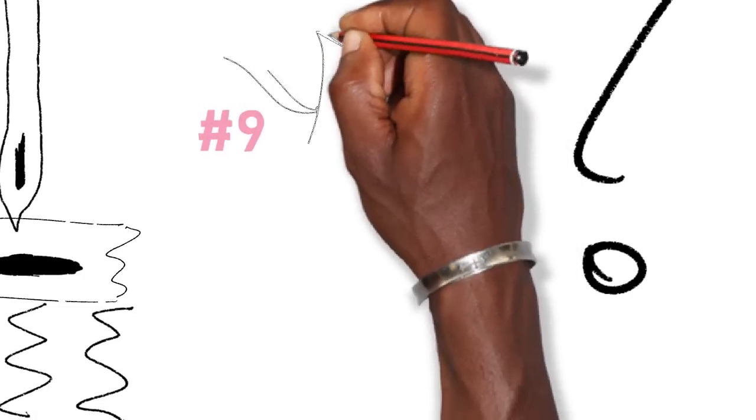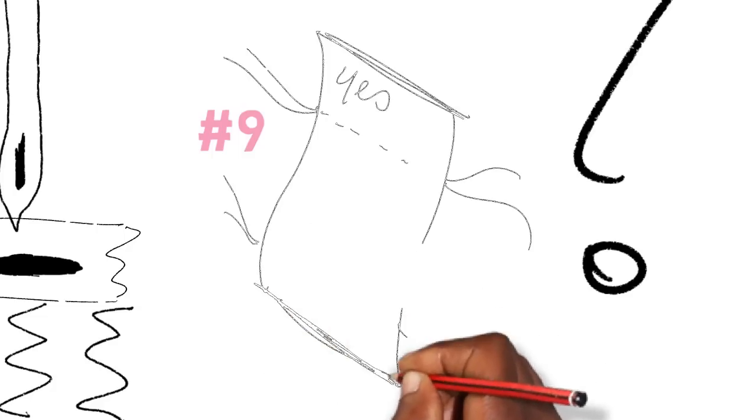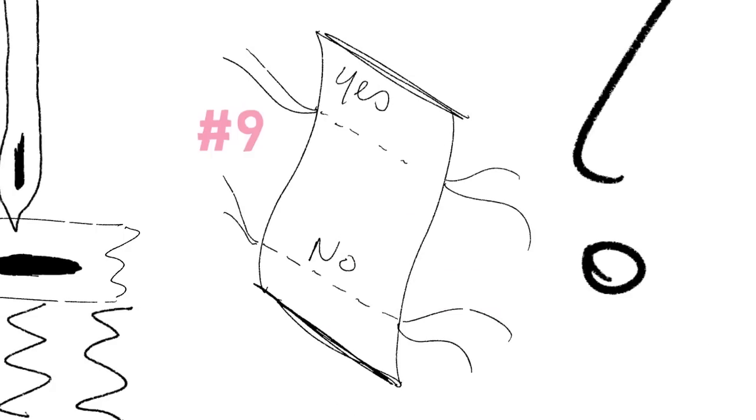Number nine, shorten the stitch length. Most projects call for a mid-range stitch but make the stitches smaller for flimsy fabrics and of course you should test this out.